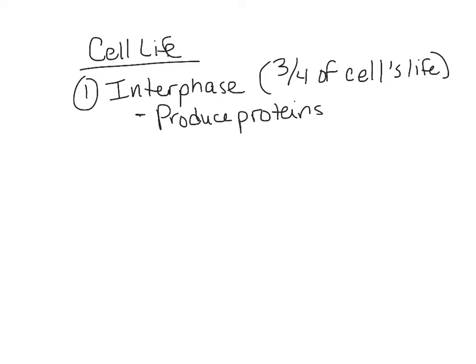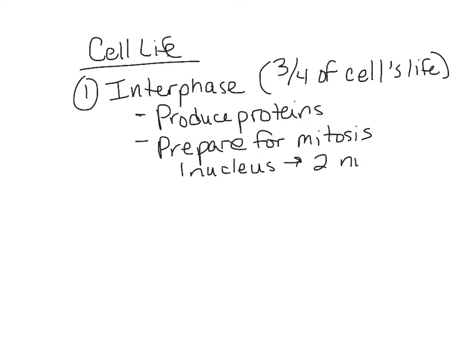At a certain point, if a cell has a nucleus and centrioles, it's going to enter into mitosis, so it has to prepare. That's the second thing it will do in interphase — prepare for mitosis. In mitosis it starts with one nucleus and ends up with two nuclei, each identical to the first. In order to end up with two nuclei, we're going to have to double the chromosomes. So the DNA gets duplicated — another name for doubling is duplication.